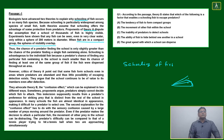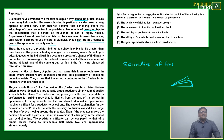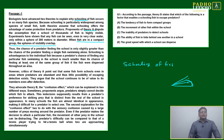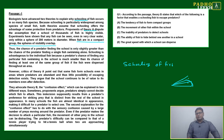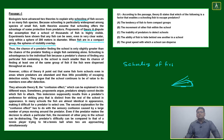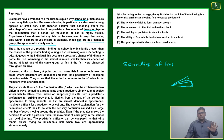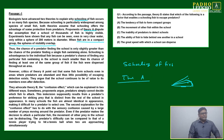Thus the chance of a predator finding the school is only slightly greater than the chance of a predator finding a single fish swimming alone. Schooling is advantageous to the individual fish because a predator's chance of finding any particular fish swimming in the school is much smaller than its chance of finding at least one of the same group if the fish were dispersed. Due to overlap, their chances of being attacked by a predator are reducing. This is Theory A.